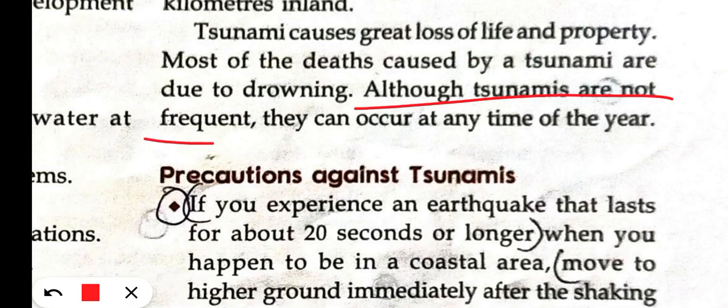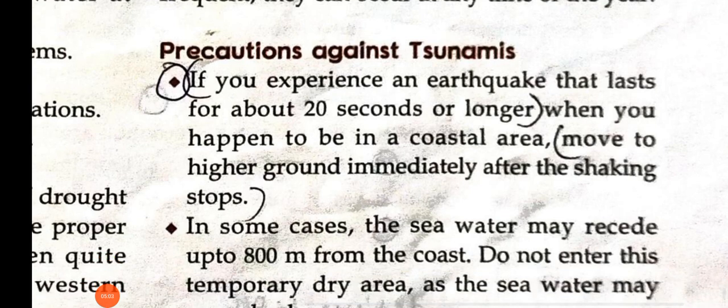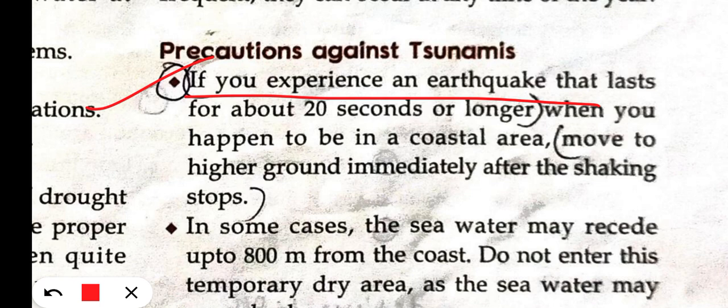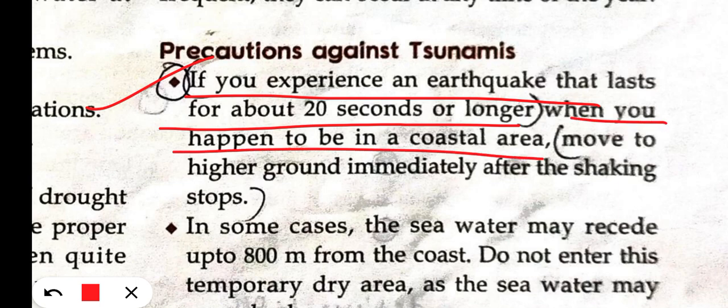Tsunamis are not frequent. They can occur at any time of year. However, if you experience an earthquake that lasts for about 20 seconds or longer while you are in a coastal area, that is a warning sign. You should immediately move to higher ground.